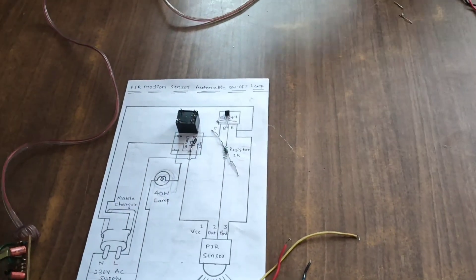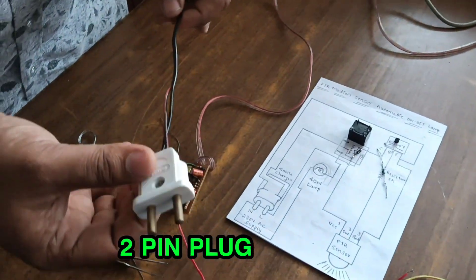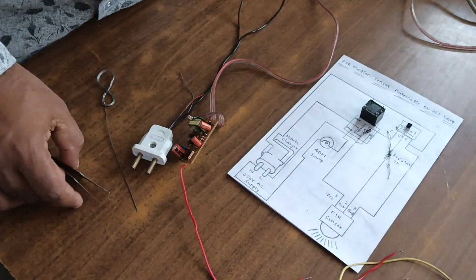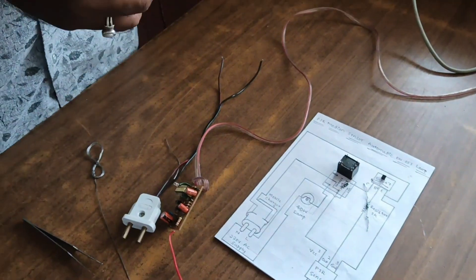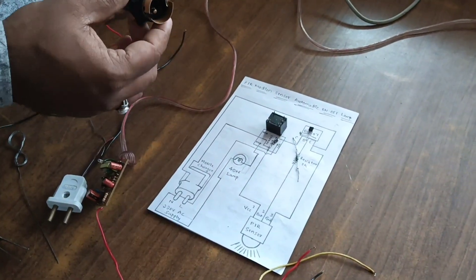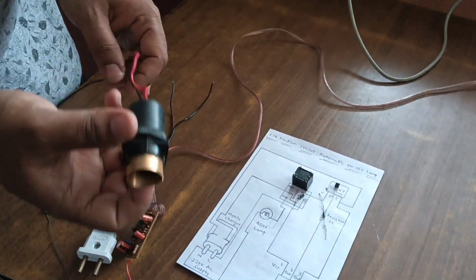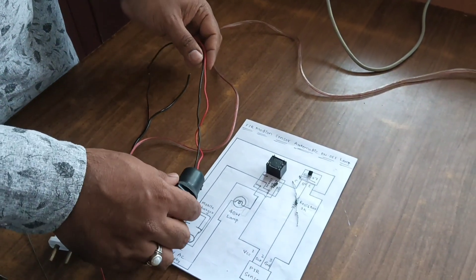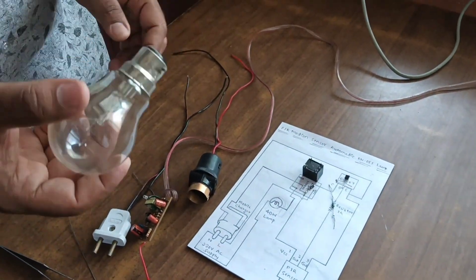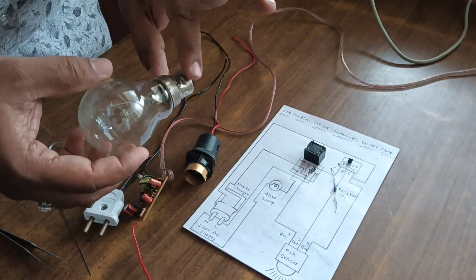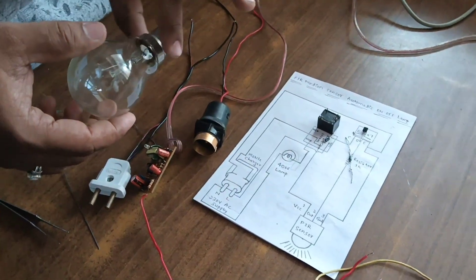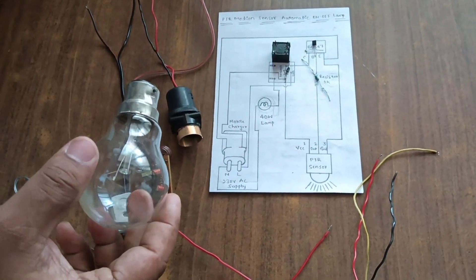We used in this two-pin plug, and we used in this project one lamp of 40 watt. This is a 40-watt lamp to operate motion sensor automatic on-off lamp.